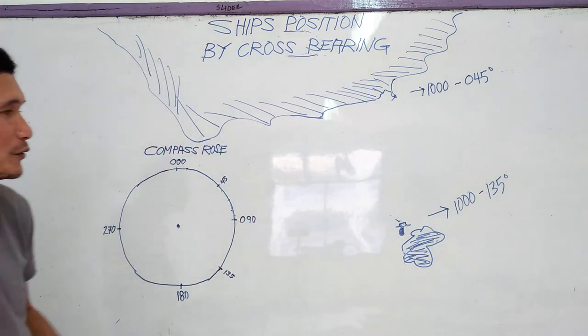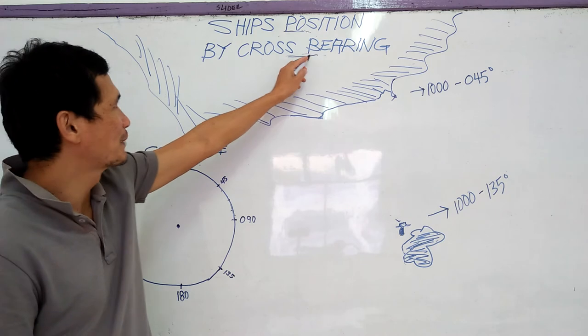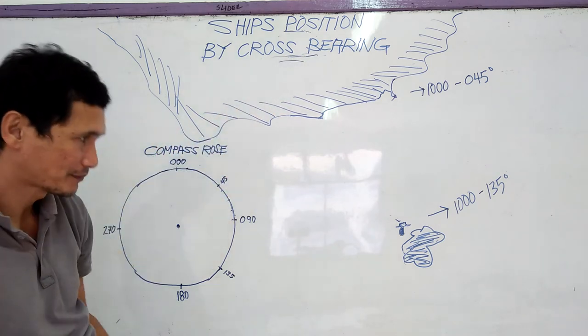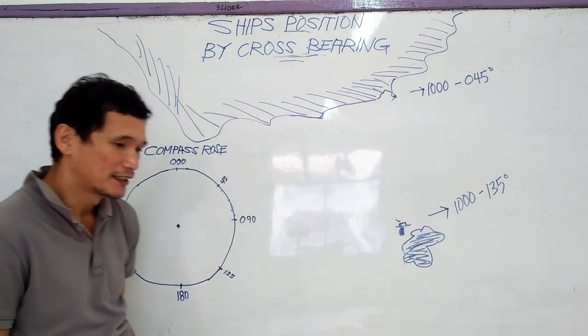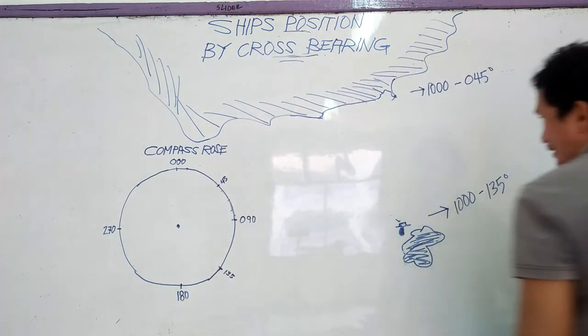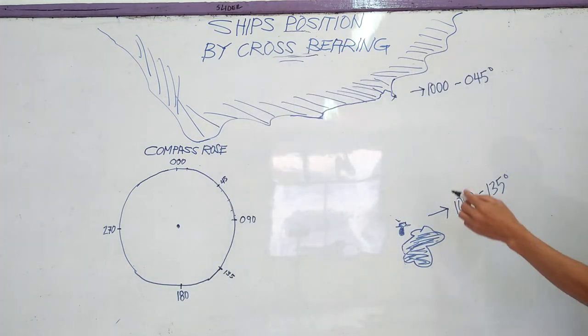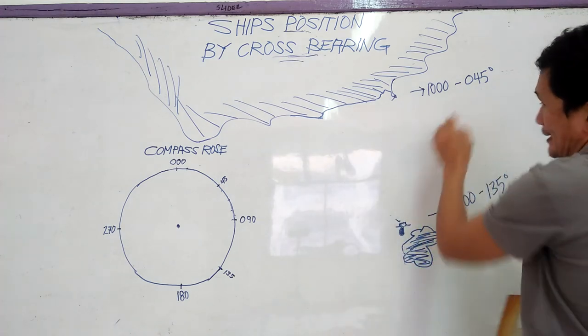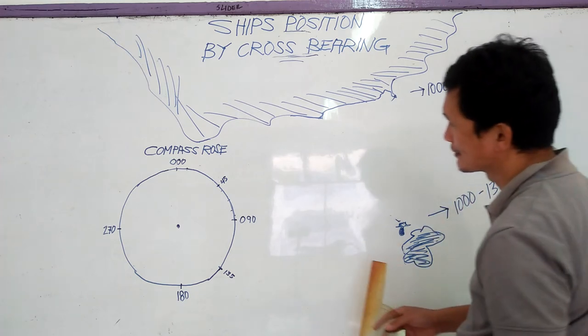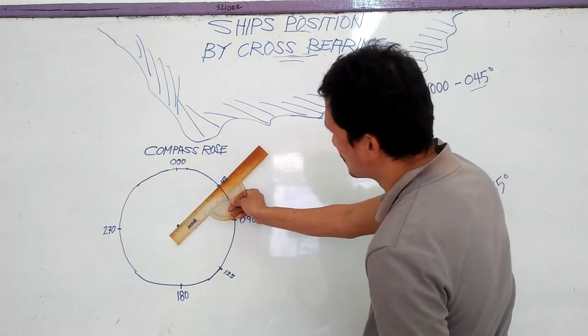So how to get this cross bearing? So 045 degrees, we will get that from the 045 degrees, we will get it from the compass also.